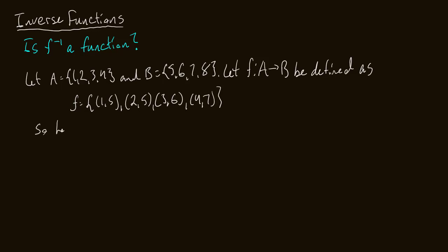The inverse relation is made by reversing the elements in each ordered pair in f. So f inverse will be equal to the set: (5,1), (5,2), (6,3), and (7,4).